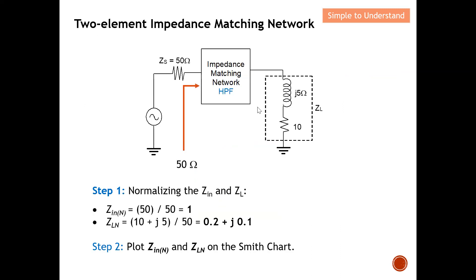Before drawing onto the Smith chart, I need to identify the two points. Z_in, which is looking inside here, is 50 ohm. For the load, I have 10 plus j5. First I need to normalize: I divide Z_in and Z_L by 50. After normalizing, Z_in becomes 1, and Z_L becomes 0.2 plus j0.1. Having these two values, I can plot them onto the Smith chart in step two.